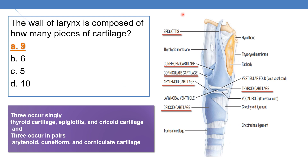Here you can see this is the epiglottis, this is cuneiform cartilage. There are 2 cuneiform cartilages, 2 corniculate cartilages, and 2 arytenoid cartilages. And 1 epiglottis, 1 cricoid cartilage, and 1 thyroid cartilage.